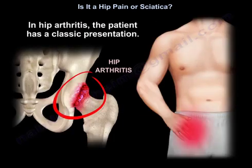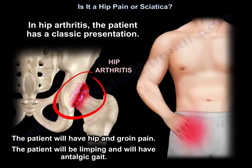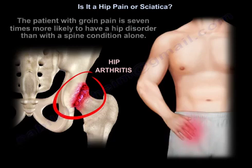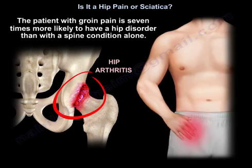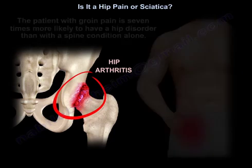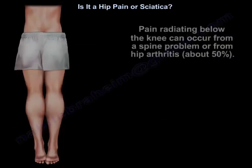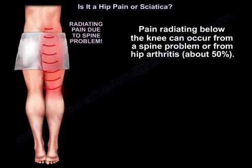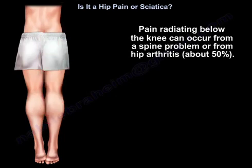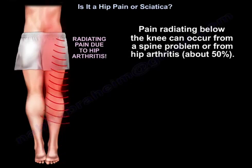In hip arthritis, the patient has a classic presentation: hip and groin pain, limping, and an antalgic gait. The patient with groin pain is seven times more likely to have a hip disorder than a spine condition alone. If you see a patient with a limp, groin pain, and decreased range of motion of the hip, then the patient probably has hip arthritis. Pain radiating below the knee can occur from a spine problem or hip arthritis — about 50% in hip arthritis.